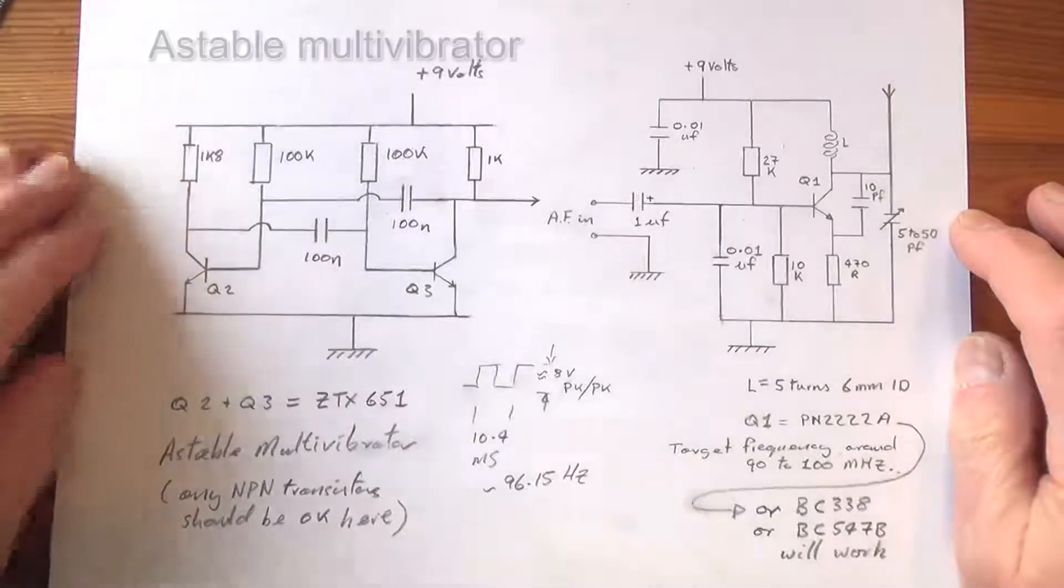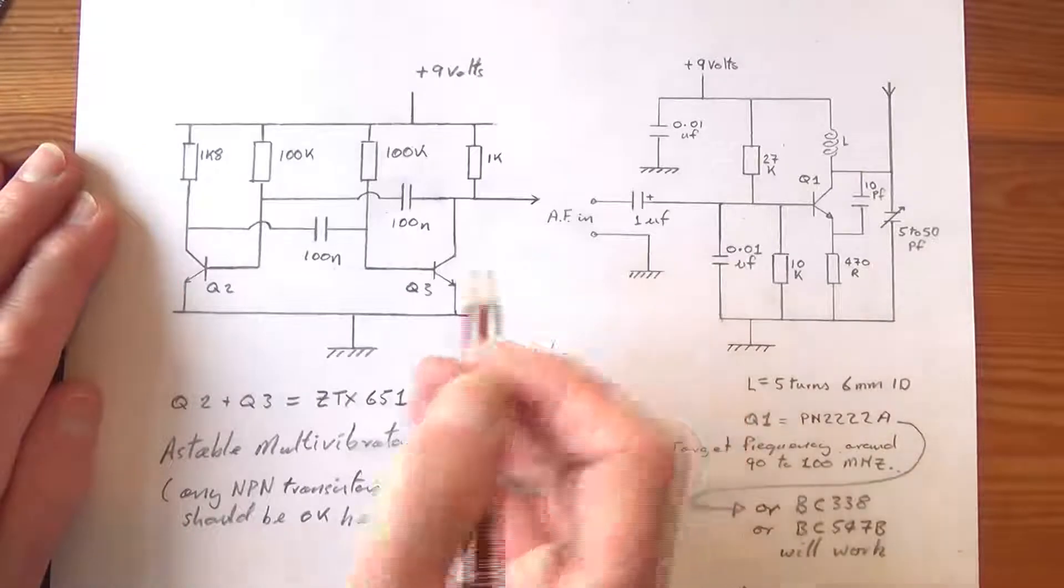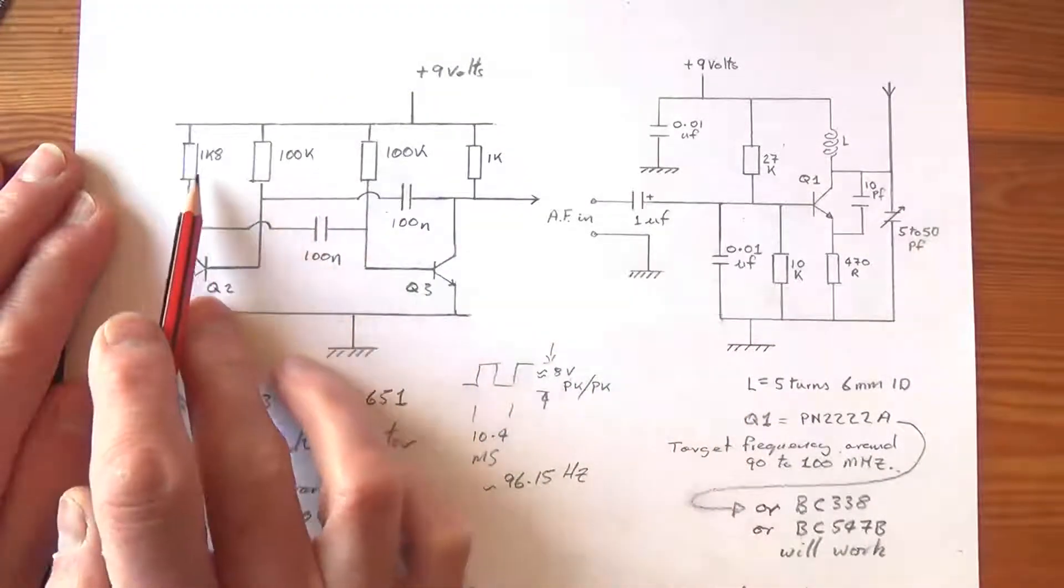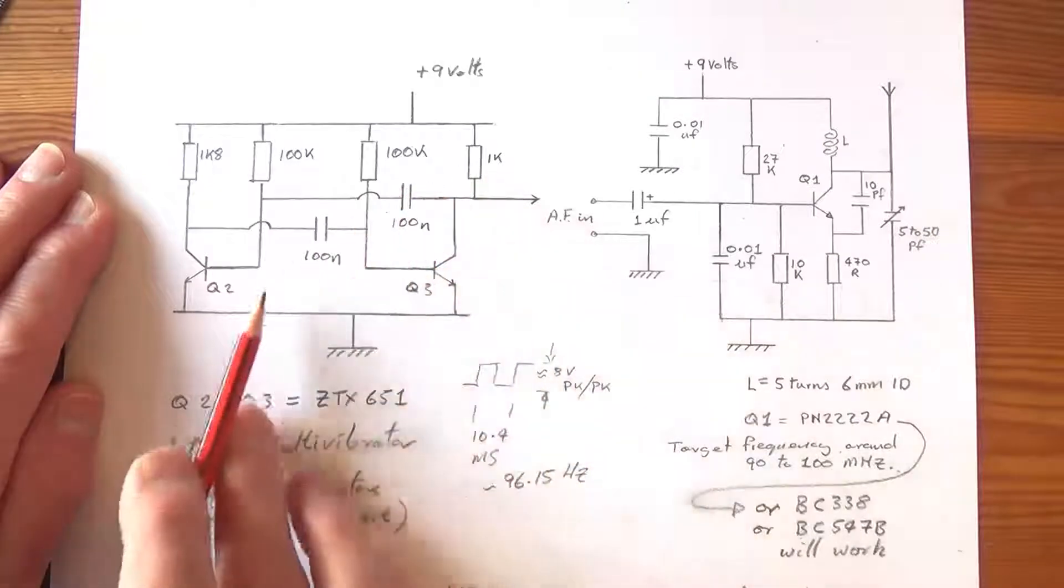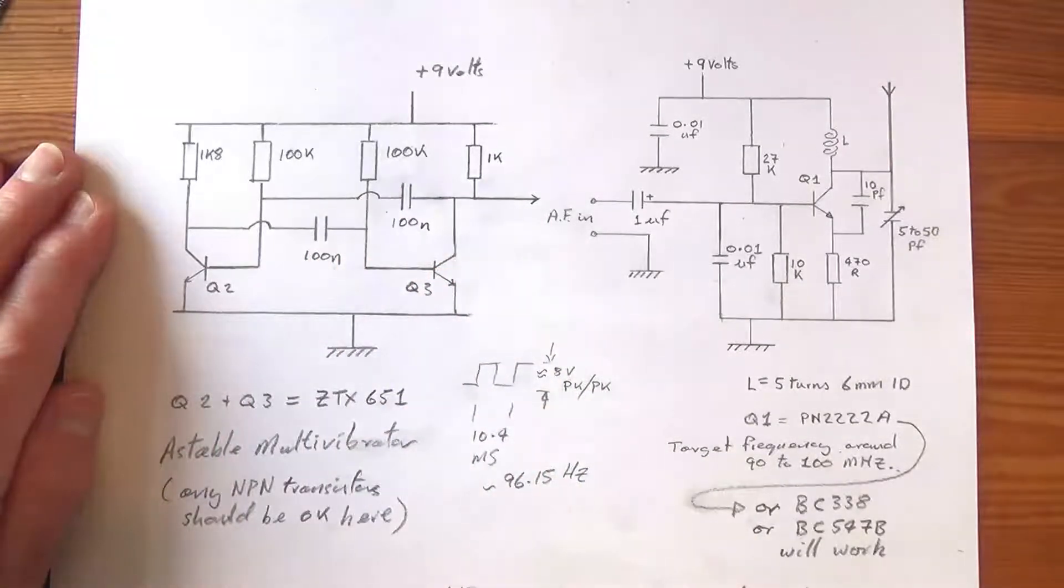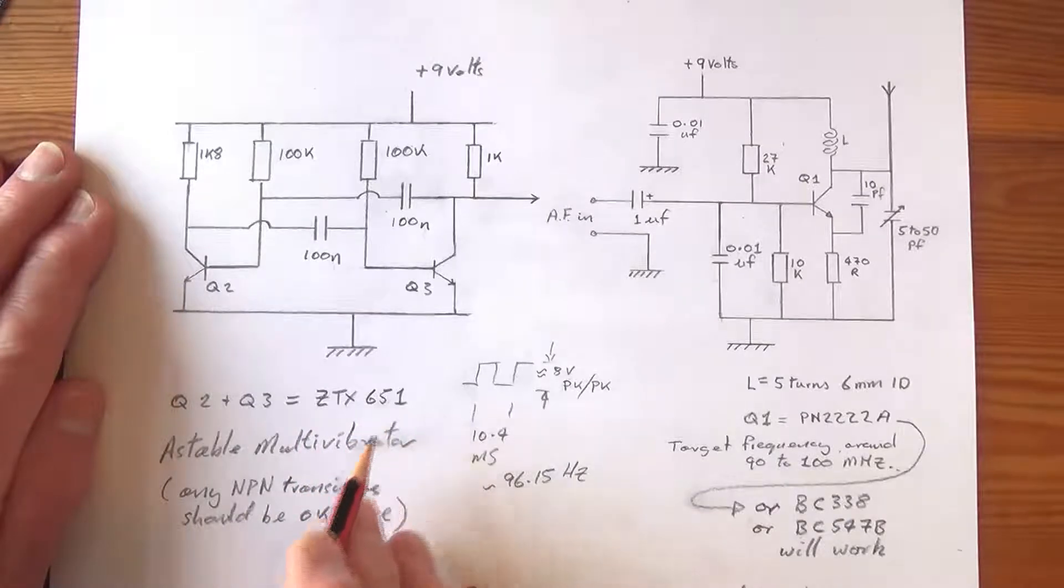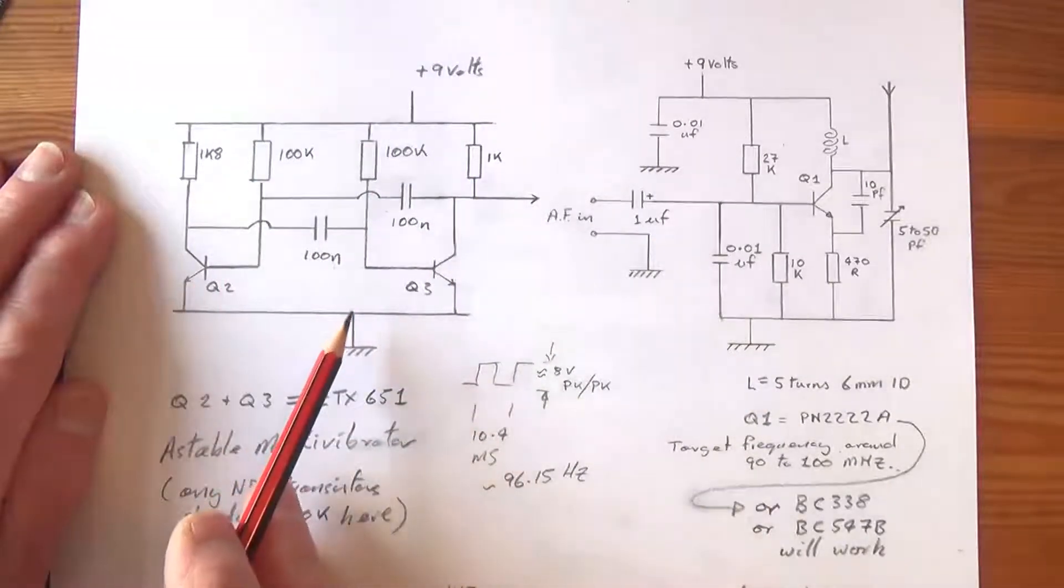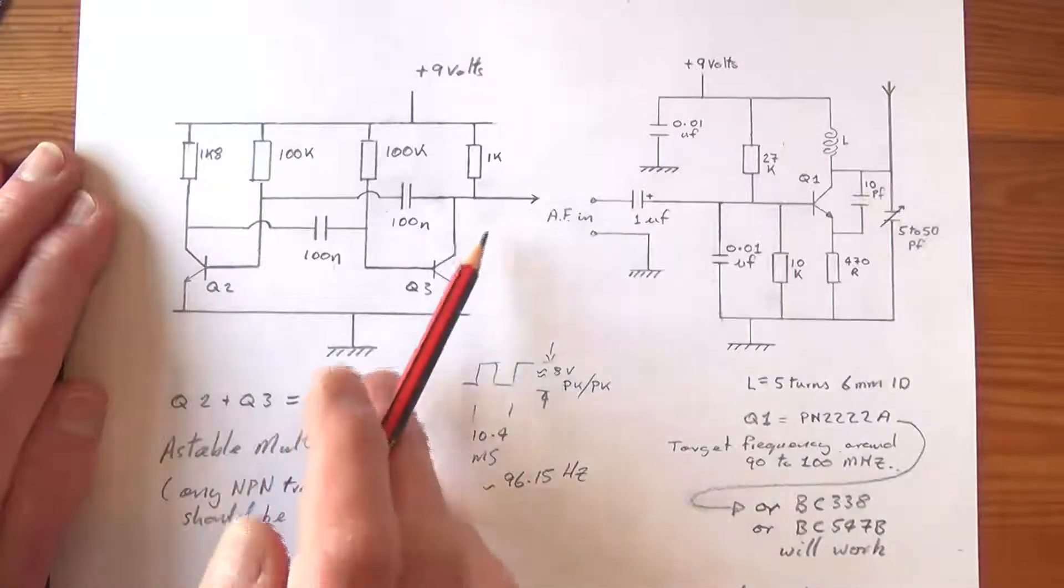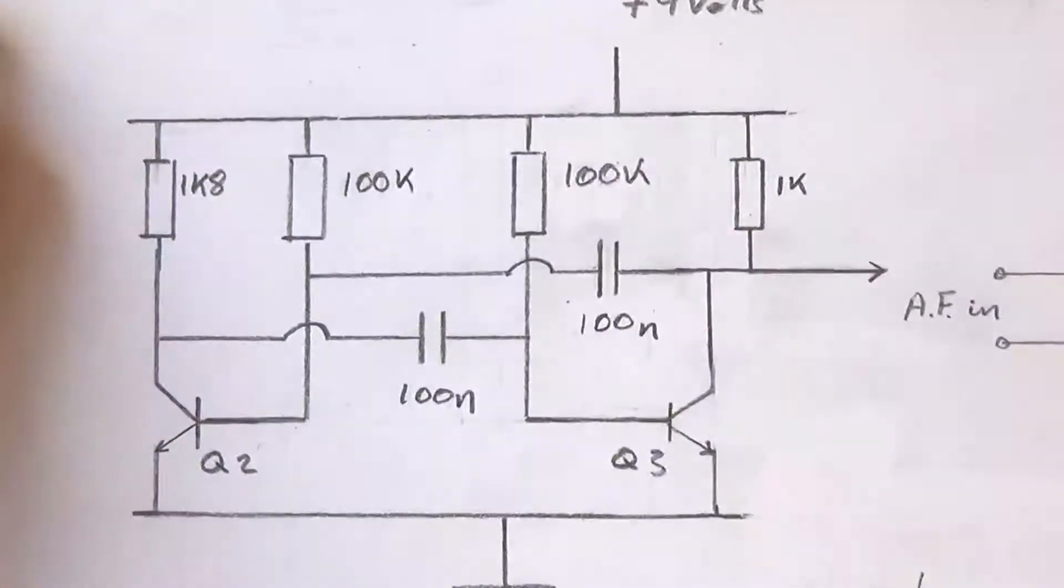This is the re-edited version of the circuit diagram because I made some silly mistakes on the first cut. The values of these components are 1.8k, 100k, 100k, 1k and these two capacitors are 100 nanofarads. The transistors I've used are ZTX651's NPN transistors but pretty much any old NPN transistor will do for this section. With the components shown this has a square wave output here of 96.15 hertz.